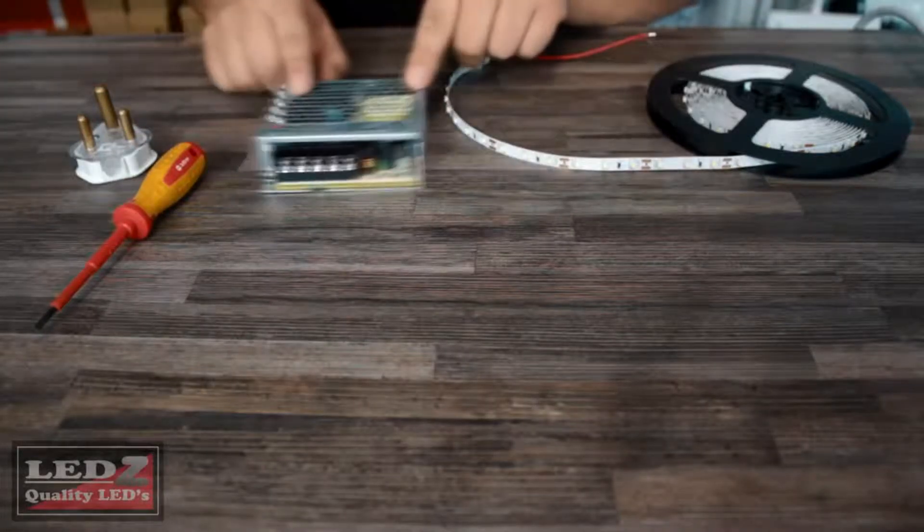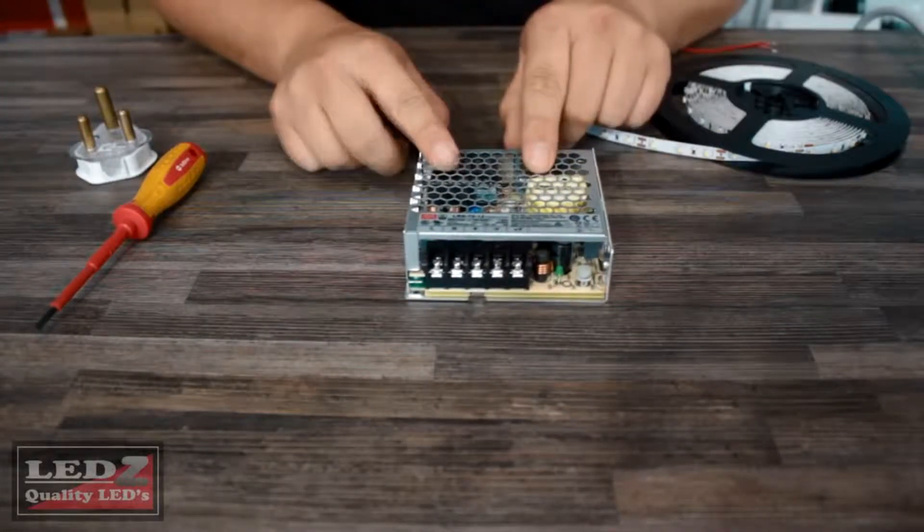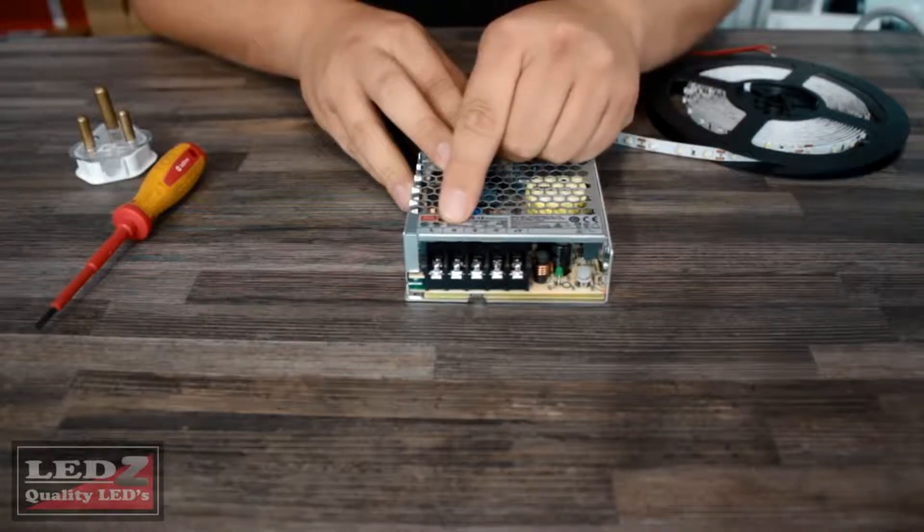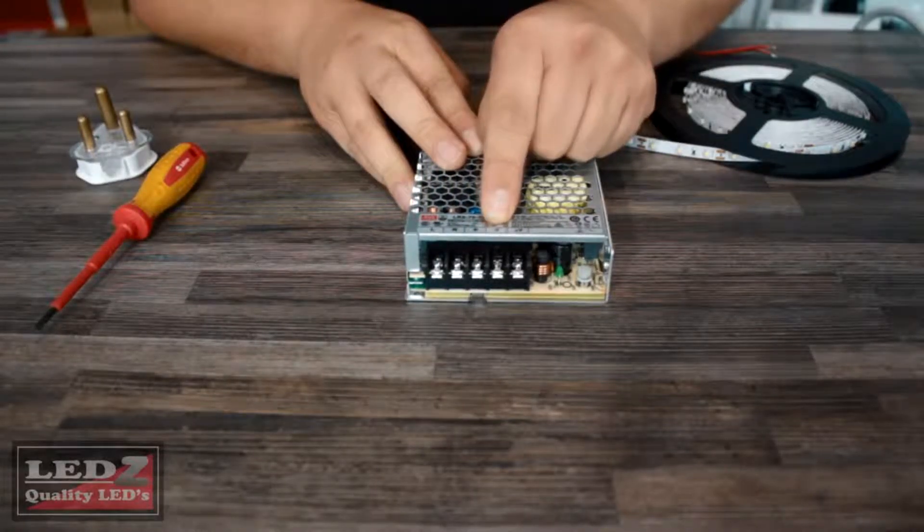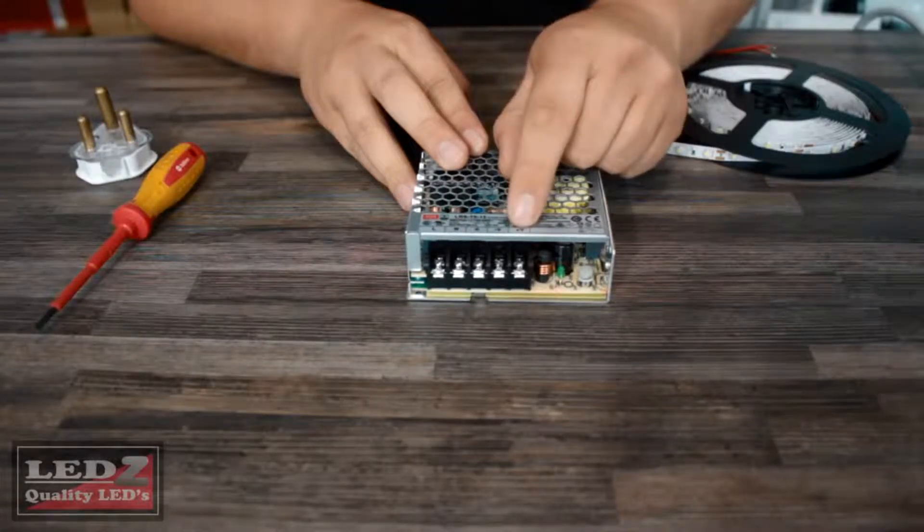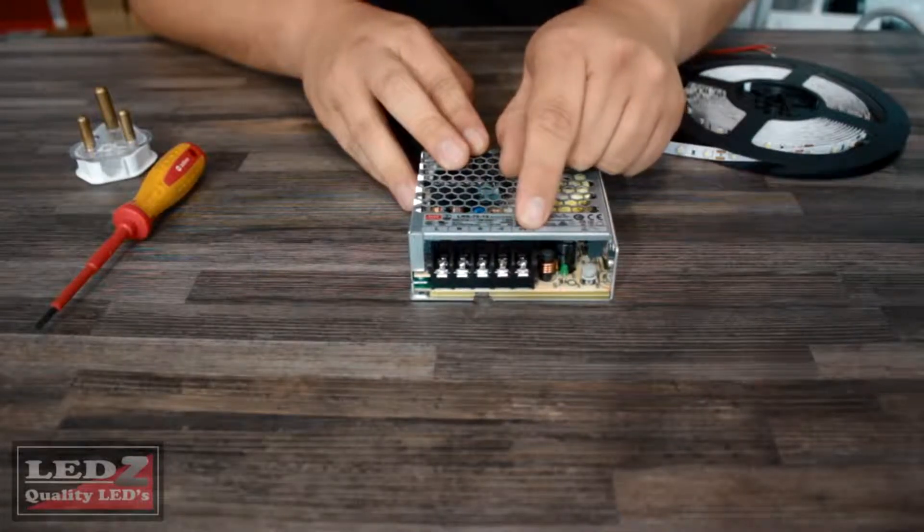Next item we're going to need is your LED transformer. You have five slots for power: your live, your neutral, your earth, your V negative as well as your V positive. This is over here where you're going to wire in your 12 volt strip lights.